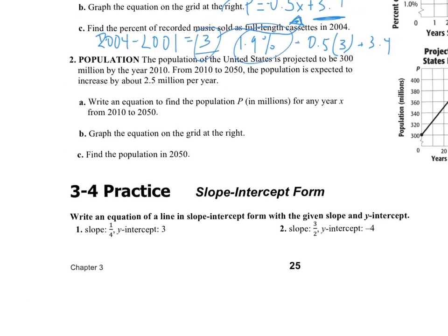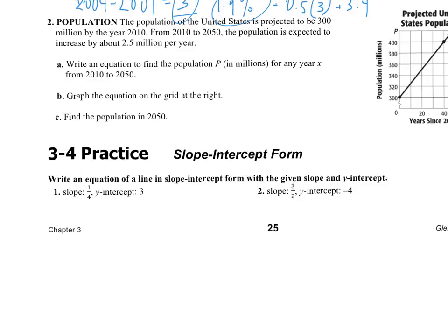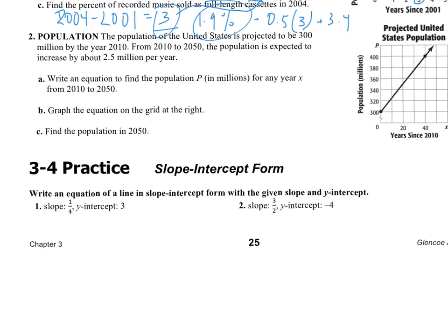Let's move down to number 2. This one, population of the U.S. is going to be 300 million by the year 2010. From 2010 to 2050, the population is going to increase by about 2.5 million per year. Write an equation to find any population for any year. So the population is going to be equal to, how is it changing? It's increasing by 2.5. So there's 2.5x. Plus or minus, where did it start at? It started at 300 million.